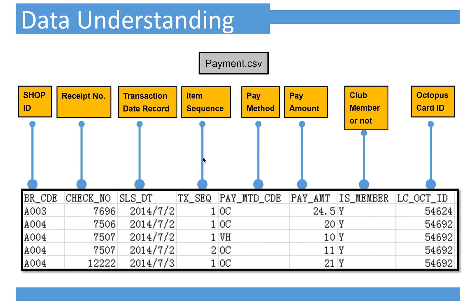Next is receipt number — when you go to the restaurant to buy something, you will get a receipt with a receipt number. The third column is transaction date record, indicating which date the transaction happened. The fourth column is item sequence — you can see it has one or two, meaning the customer bought two things in that transaction.